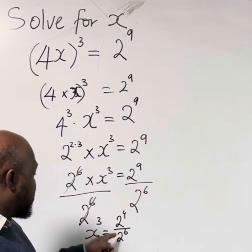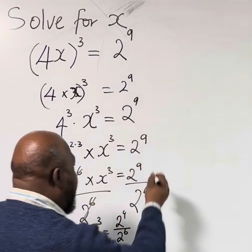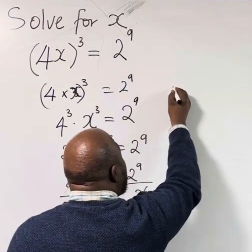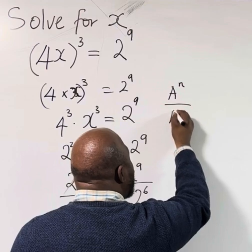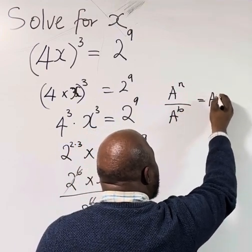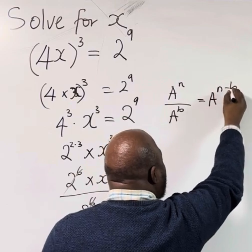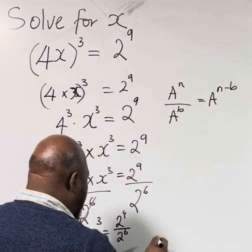By the law of indices, we know that since they both have the same base and they are dividing, a^n ÷ a^b = a^(n-b). So you can use that one here.